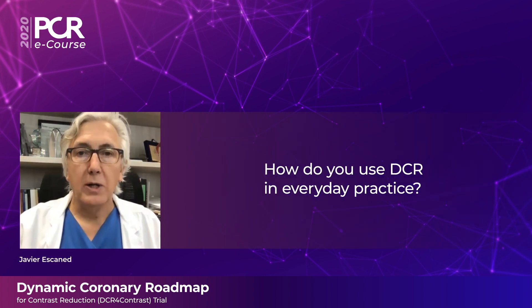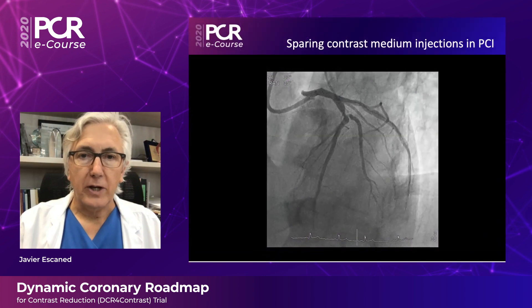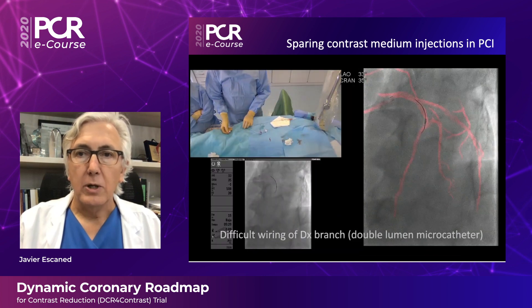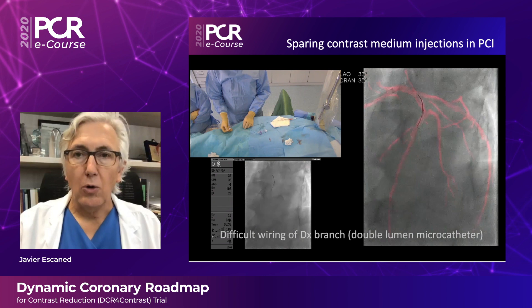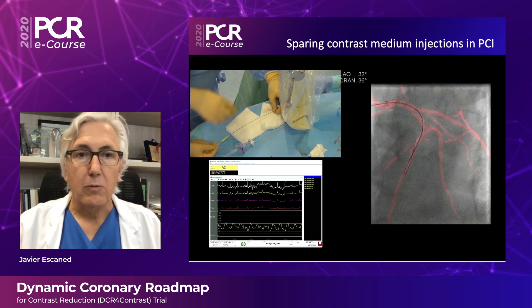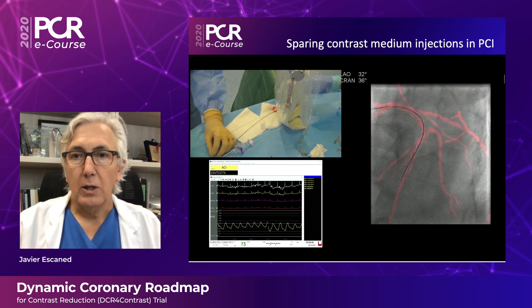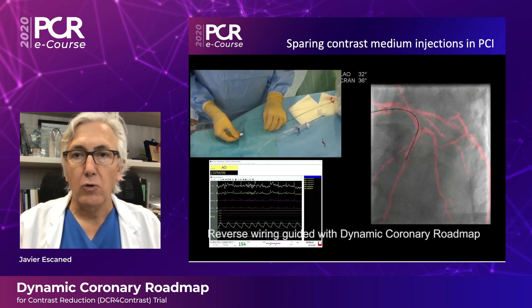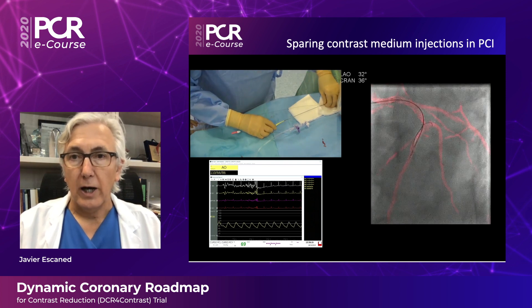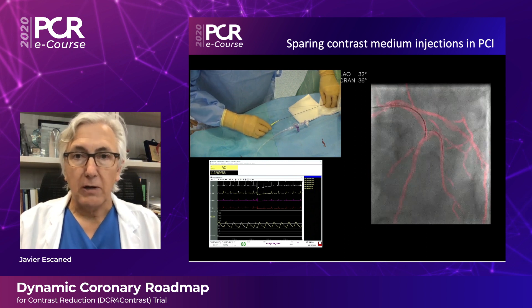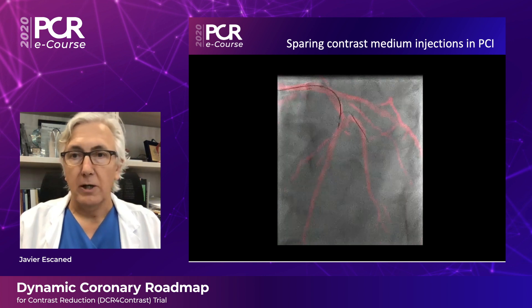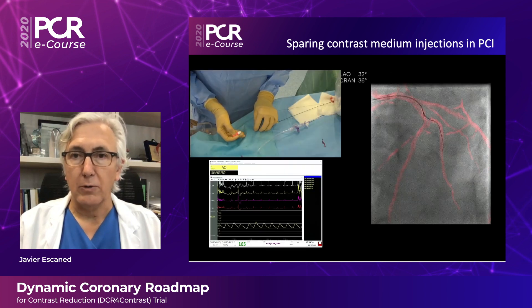Let me show you how it works in clinical practice. This is a patient with a difficult bifurcation, mainly because of the takeoff of this diagonal branch — it was very difficult to wire even using a double lumen microcatheter. You can see that all these maneuvers, using a retrograde wiring technique, are performed without making contrast injections. I'm just using the silhouette of the arteries delivered by dynamic coronary road mapping, performing over 10-15 minutes without a single contrast injection, just using the first one.